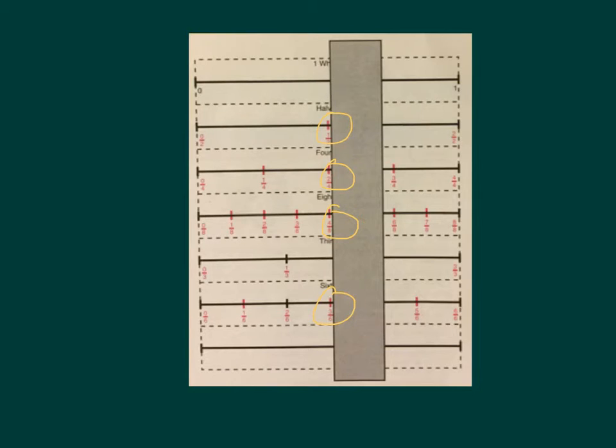All of these fractions mean the same thing but represent different parts. In this case, one-half represents one out of two. Two-fourths represent two out of four. Four-eighths represents four out of eight. And three-sixths represents three out of six pieces.